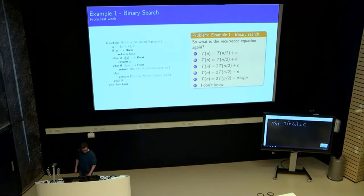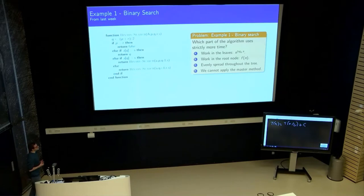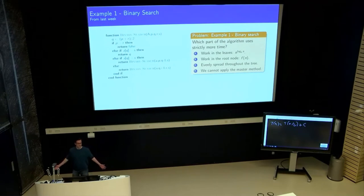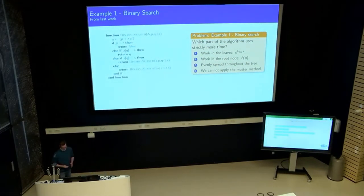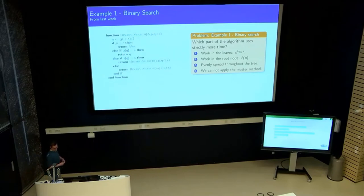So given that, my question is can we apply the master method, and if so, which of the cases do I end up in? Is it more work in the leaves, more work in the root, is the work evenly spread, or well, too bad we cannot apply the master method? But well, not to worry, we already knew that binary search was only log n work. You also seem to be spread about the different options, so answer c is just about the most popular, equally spread.